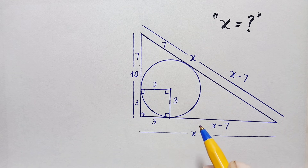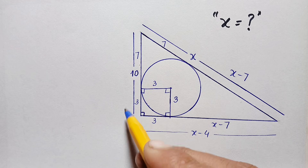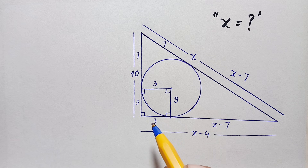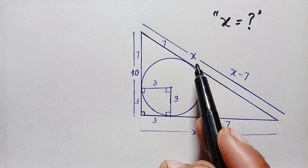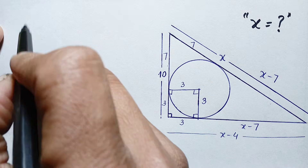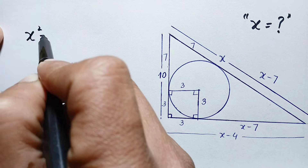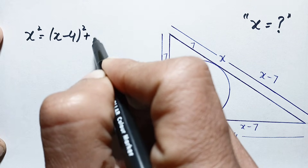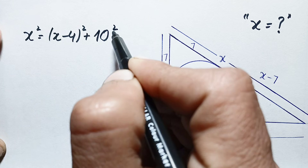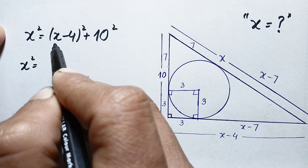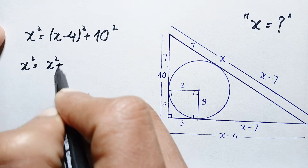Now in this right angle triangle we have the values of all three sides: the perpendicular is 10 units, the hypotenuse is x, and the base is x minus 4. We apply the Pythagorean theorem: the square of the hypotenuse equals base squared plus perpendicular squared. So we write x squared equals (x minus 4) squared plus 10 squared.